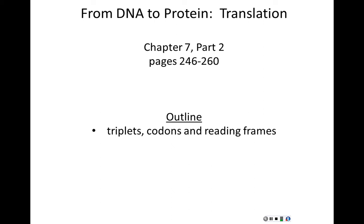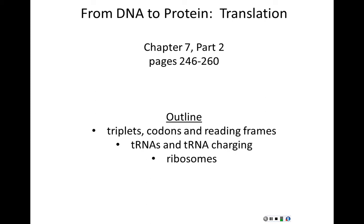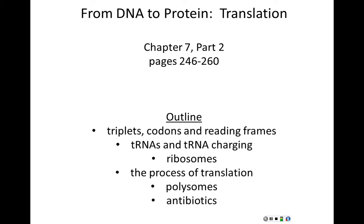Codons are groups of three nucleotides which contain the information for a single amino acid. We'll then talk about tRNAs and how tRNAs are charged — tRNA charging refers to the process of linking an amino acid onto a tRNA. These first two components are meant to set the stage for discussing translation and to explain all the different players used in translation. We'll then discuss ribosomes themselves, the protein-making machinery of the cell, and the process of translation. After translation, we'll briefly cover polysomes, antibiotics, and different points of regulation.